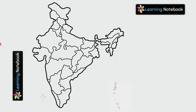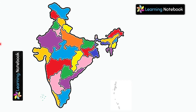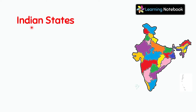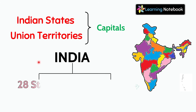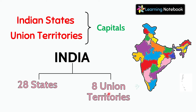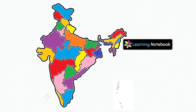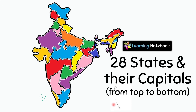Hello friends, welcome to our channel Learning Notebook. This is our country India. In today's video we will be learning Indian states, union territories, and their capitals. In India there are 28 states and 8 union territories. Now let's start and learn the 28 states and their capitals from top to bottom.